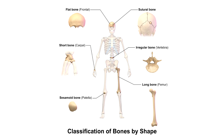Sesamoid bones are named like this because they look like sesame seeds — they're small and flat. An example of sesamoid bones includes the patella. Sesamoid bones actually develop inside the tendons so they're usually found near joints, at the knees, the hands, and the feet.